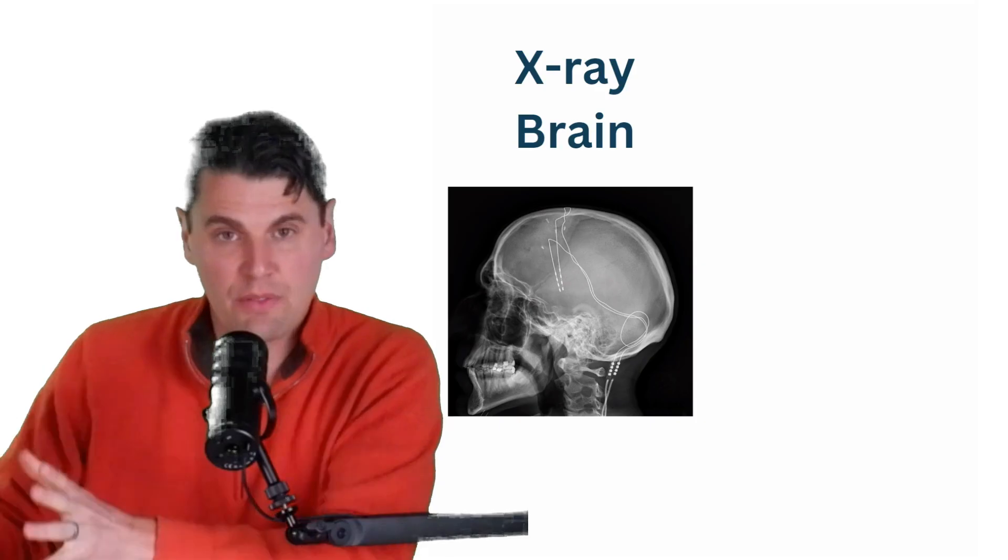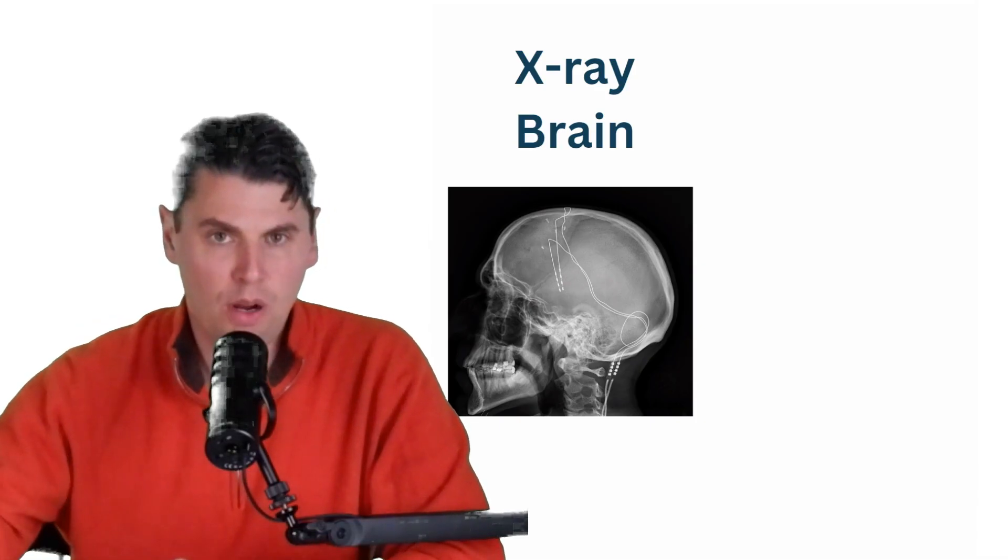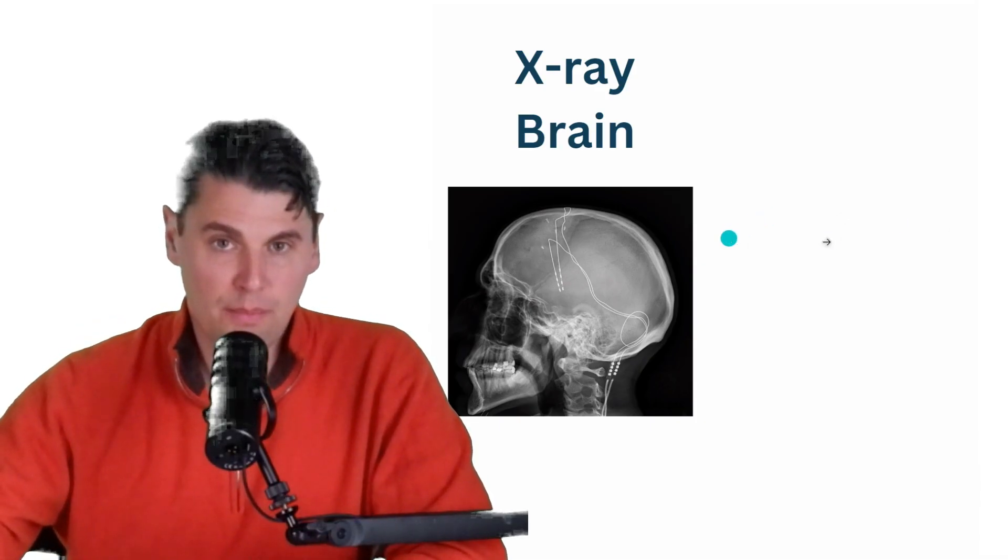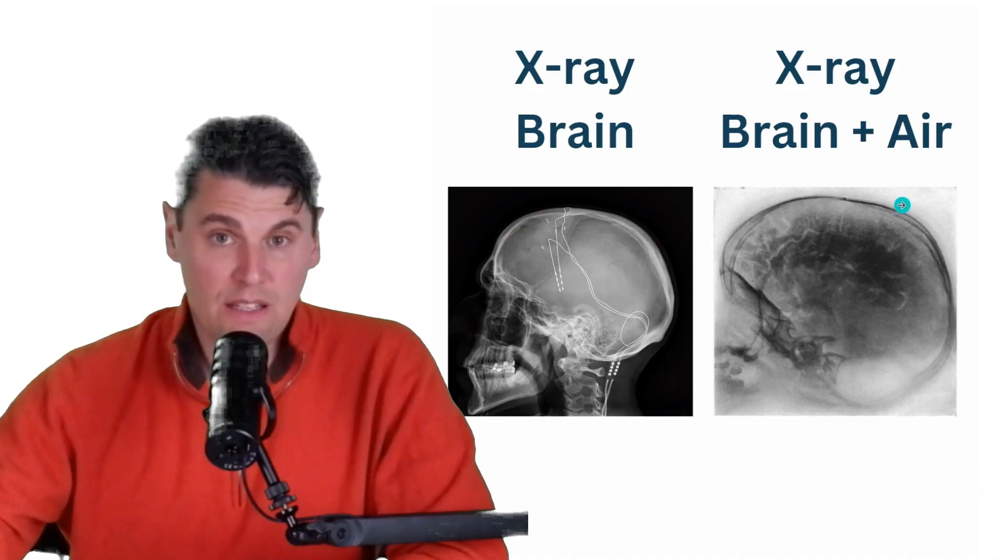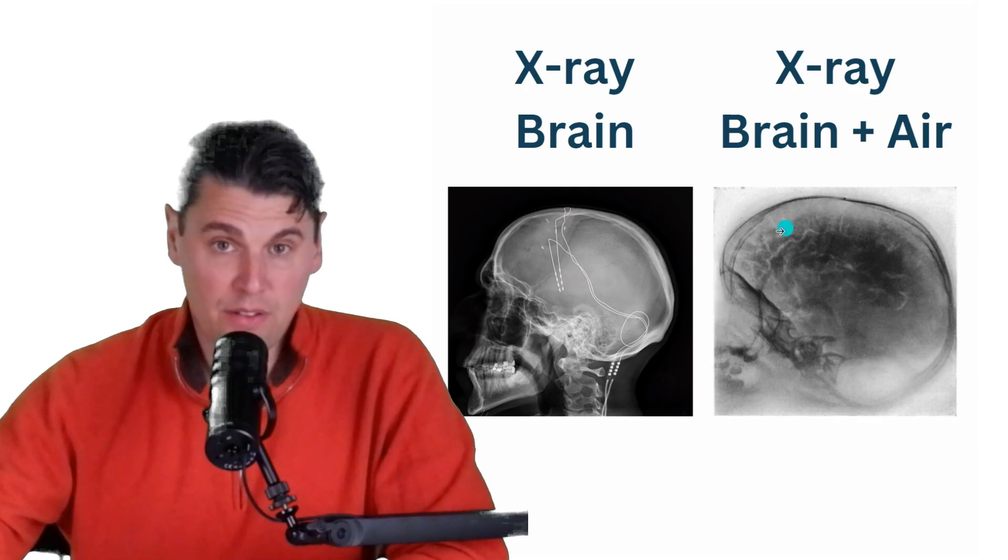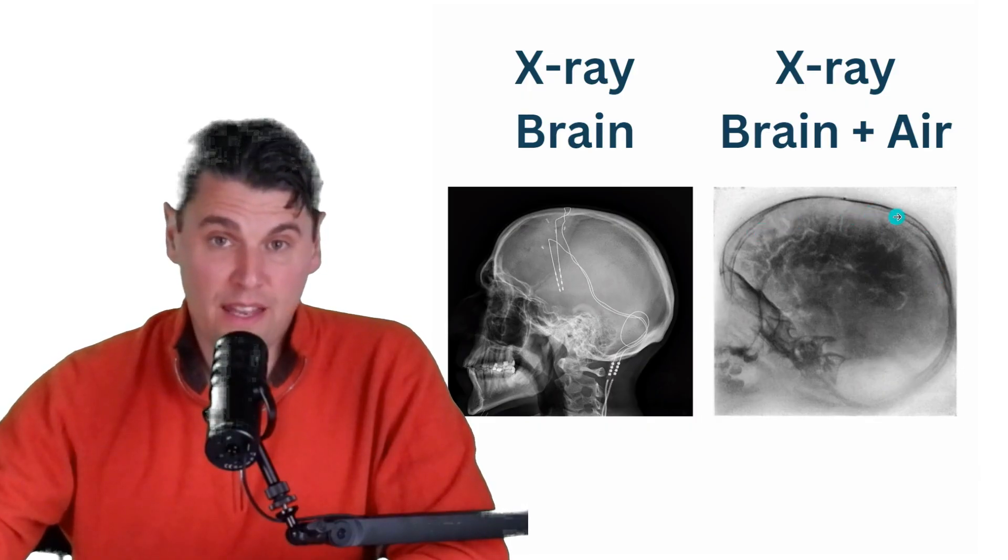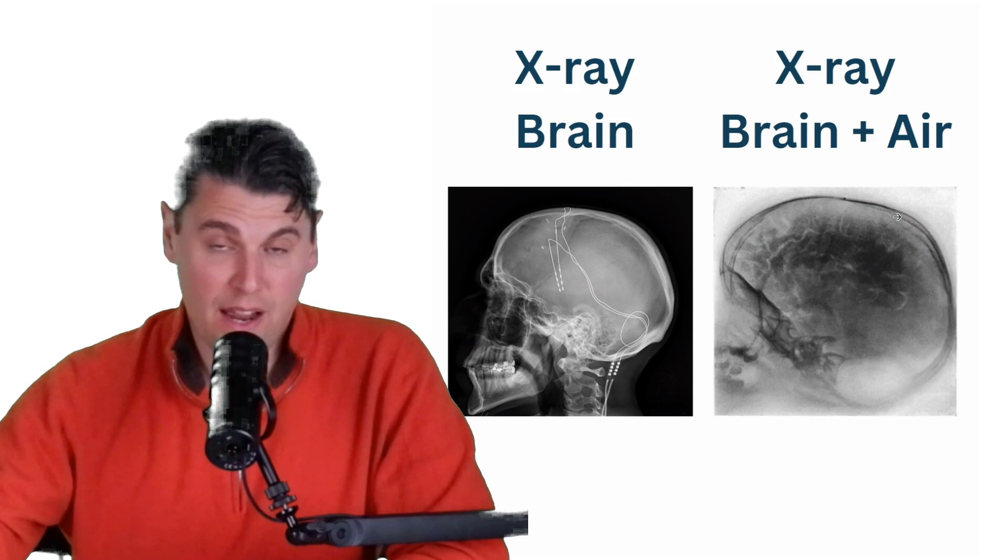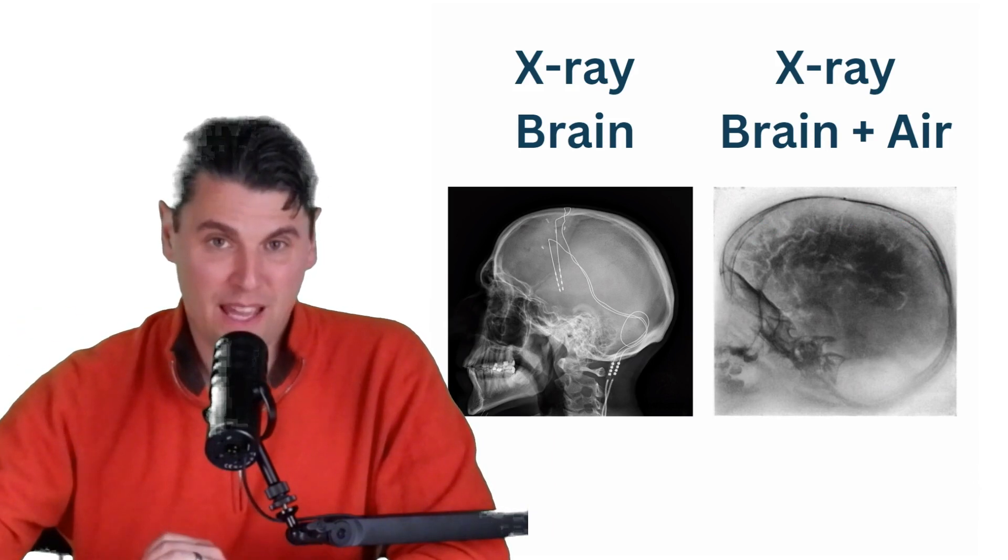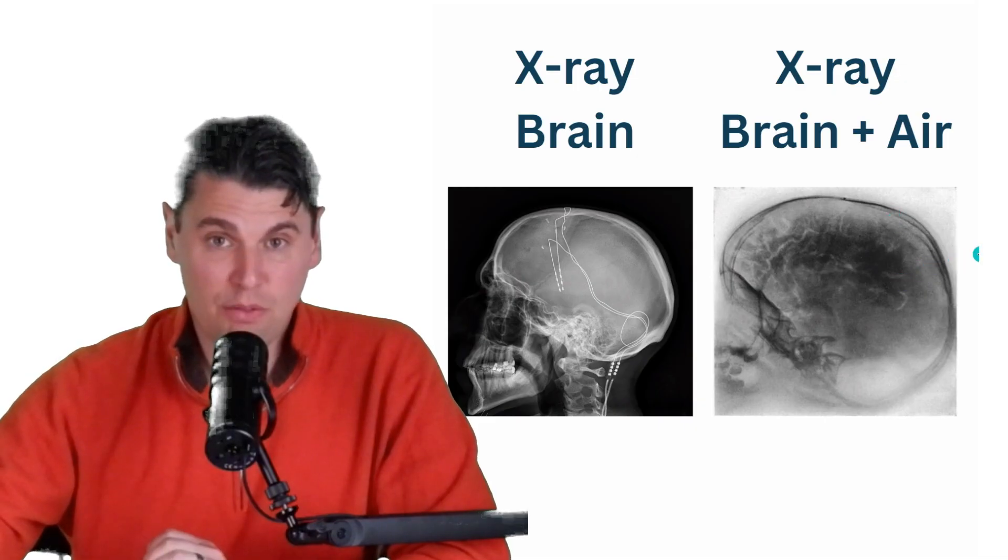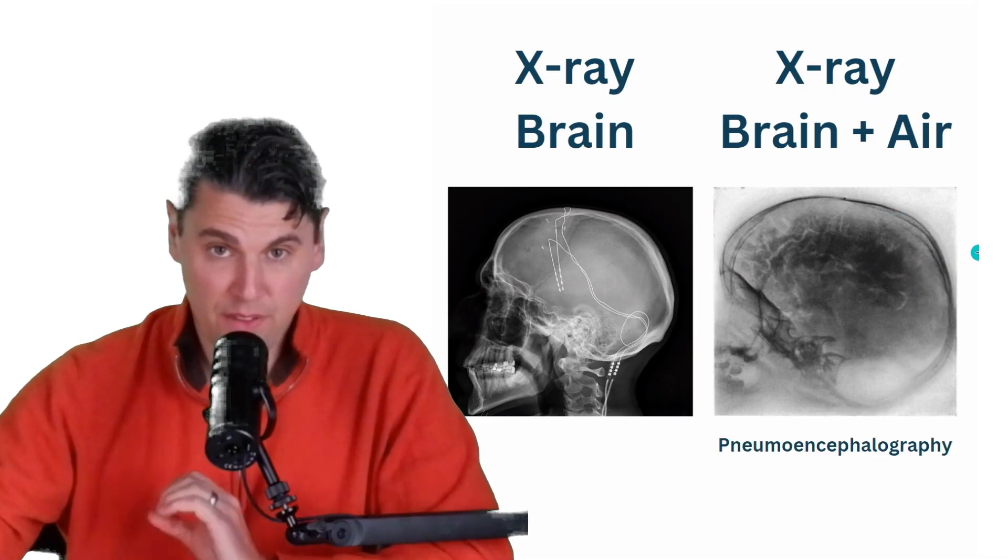First off, we'll talk about changing the X-ray attenuation in a negative manner. That can be done especially well by using air or by using carbon dioxide. Air and carbon dioxide both have a very low X-ray attenuation. They're relatively low Z and they're low in density. You don't see X-rays of the brain that often anymore, but an X-ray of the brain would look something like this.